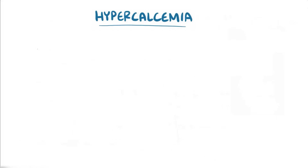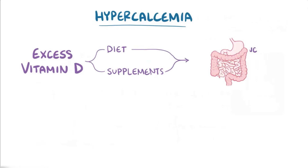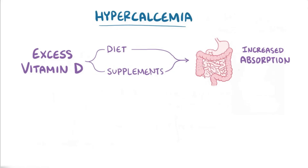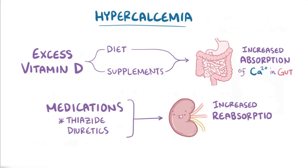Over-stimulated osteoclasts without enough osteoblasts can result in lytic bone lesions, commonly seen in some malignancies. Another cause of hypercalcemia is excess vitamin D, either through the diet or through supplements, which can cause too much calcium to be absorbed in the gut. Finally, there are some medications, like thiazide diuretics, which increase calcium reabsorption in the distal tubule of the kidney, contributing to hypercalcemia.